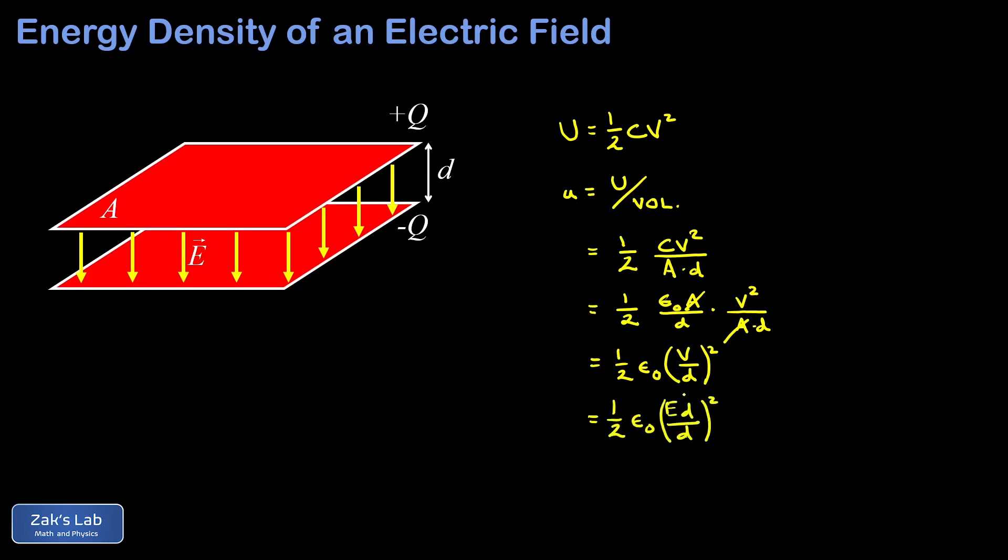So the d's cancel out and I get this result that the electric field energy density is given by one half epsilon zero times big E squared, the electric field strength squared. Now that's not a proof, it's more of a motivation.